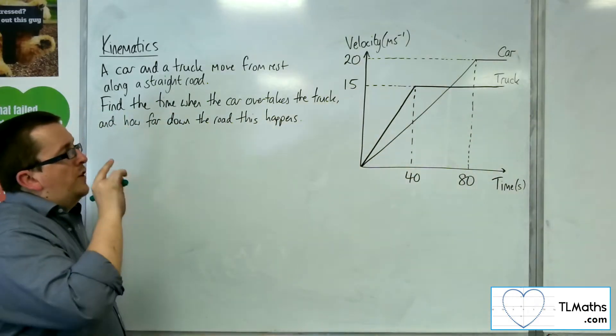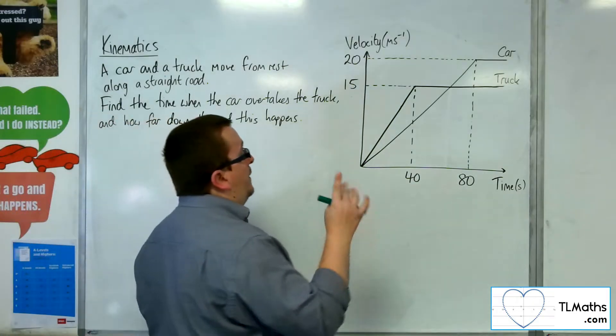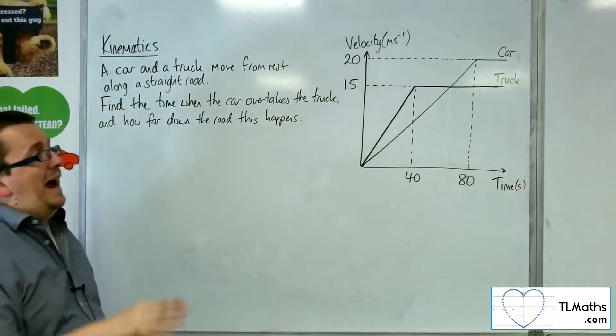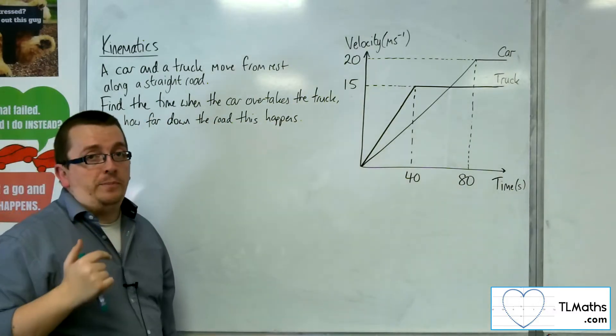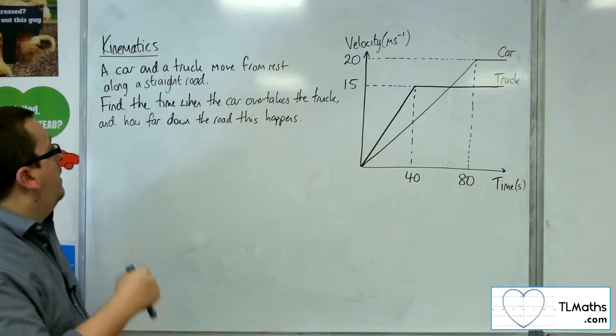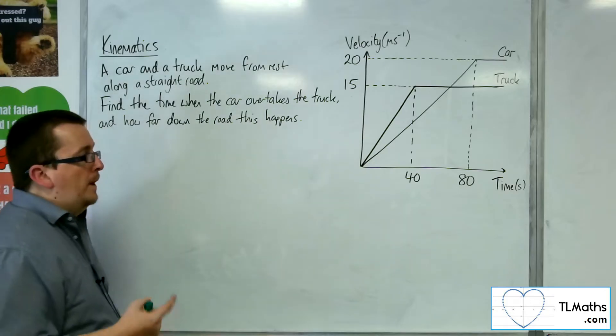The car, on the other hand, also starting from rest, takes 80 seconds to reach 20 meters per second and then continues at 20 meters per second. Find the time when the car overtakes the truck and how far down the road this happens.